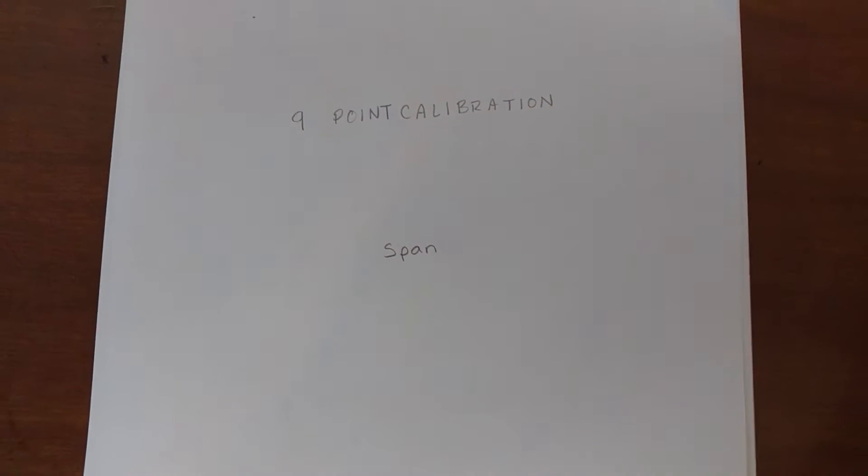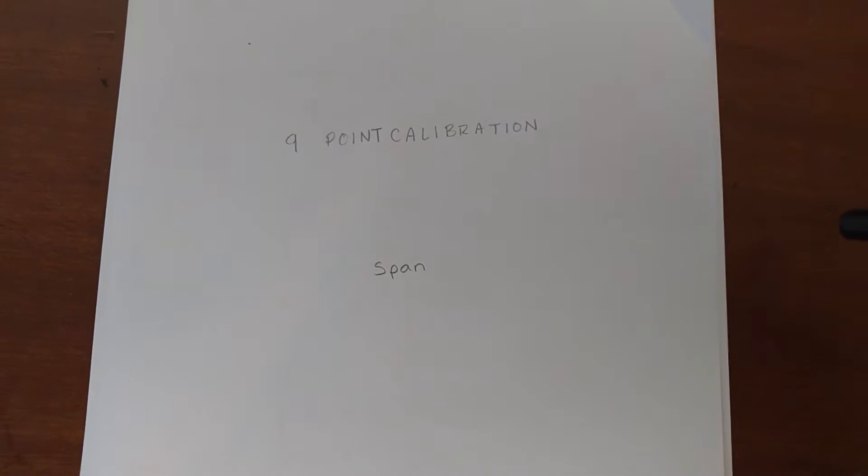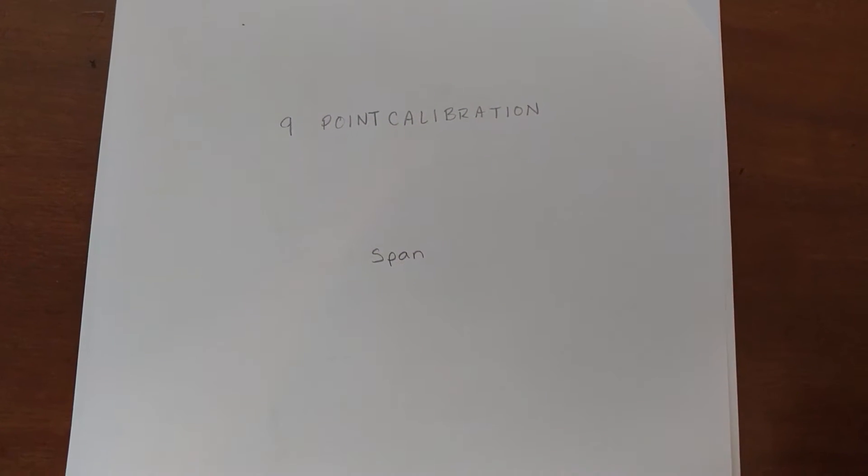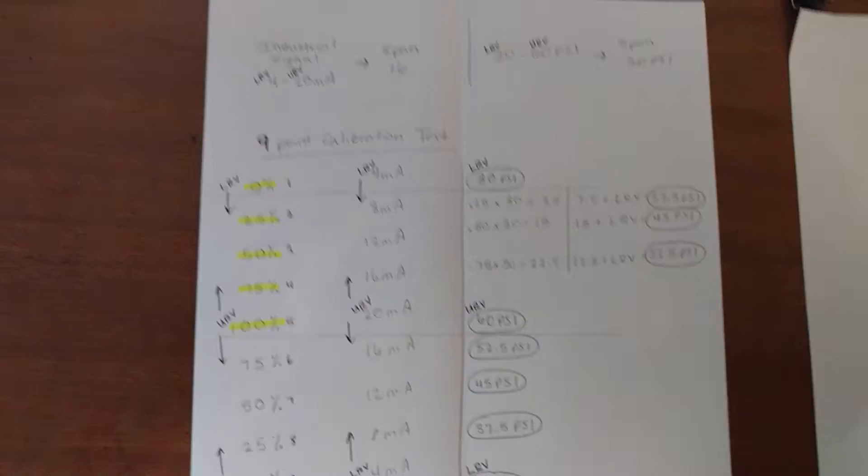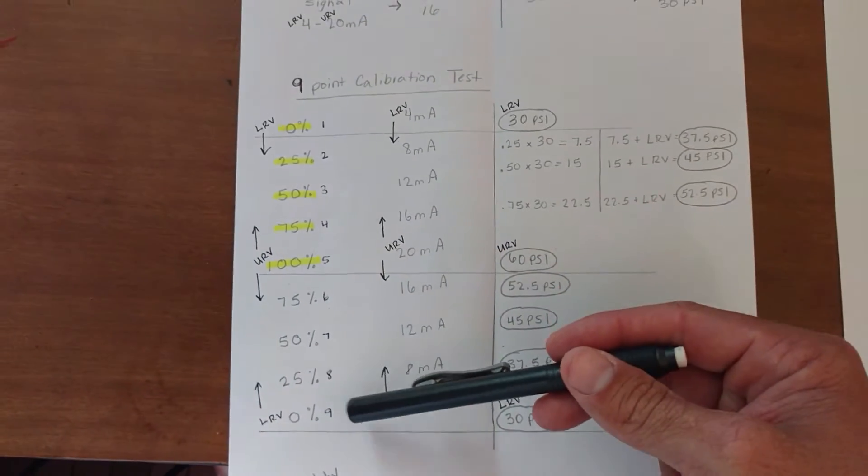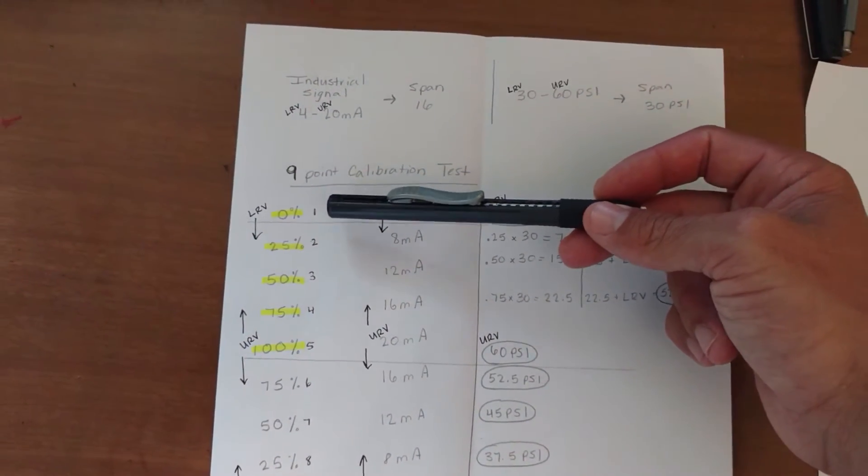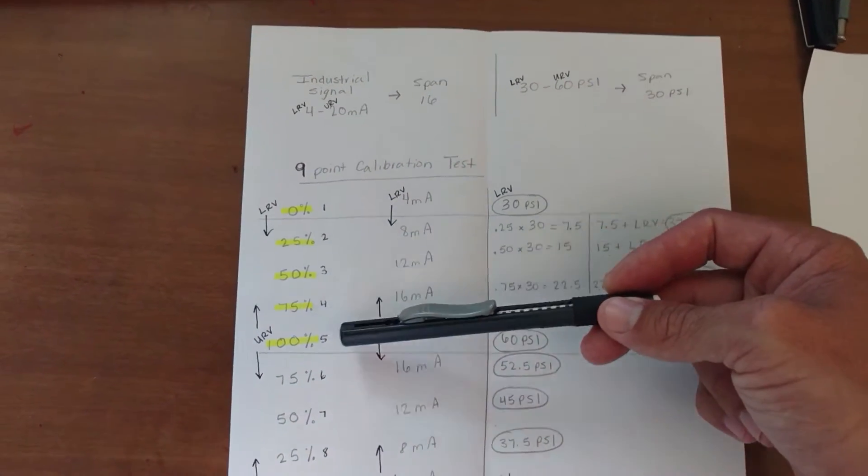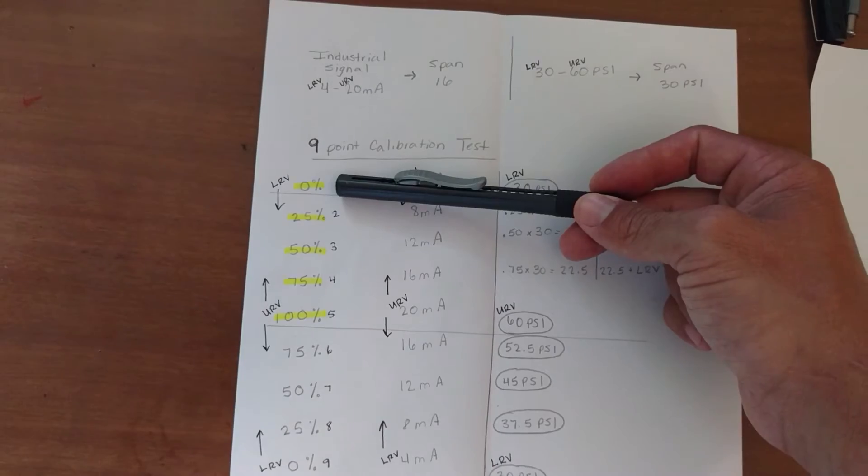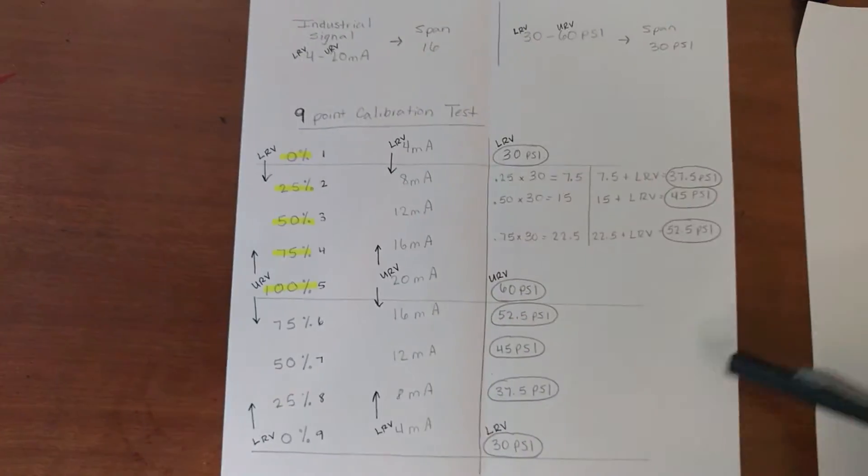The nine-point calibration test is basically finding nine different points for nine different percentages of your span. Each point is a percentage of our span that increases in 25% increments up to 100%, starting with 0%, and then decreasing back down to 0% from 100%.